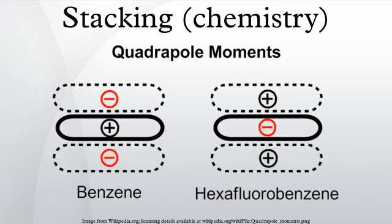The quadrupole moment is reversed for hexafluorobenzene due to the electronegativity of fluorine. The benzene dimer in the sandwich configuration is stabilized by London dispersion forces but destabilized by repulsive quadrupole-quadrupole interactions.